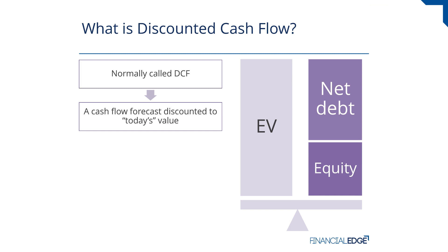Also there's inflation, which would reduce your purchasing power over that year, and there's risk — risk that you might not get the money in a year's time. So for a variety of reasons we prefer money now; money now has greater value. In a discounted cash flow we take the cash flows for many years into the future and discount them back to today to find out what the value of all of those cash flows today might be.